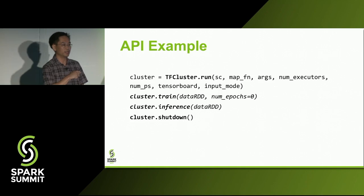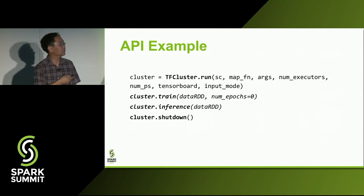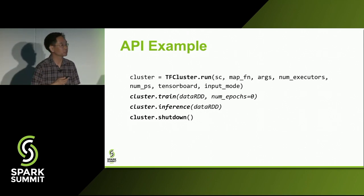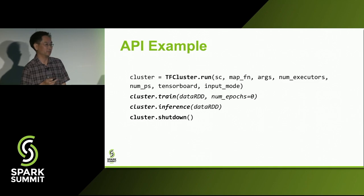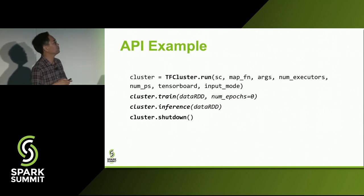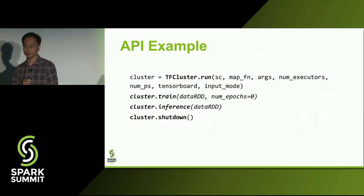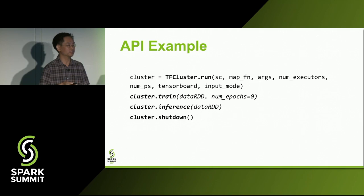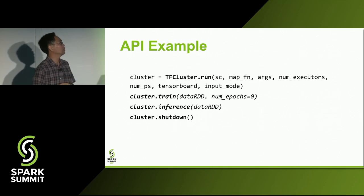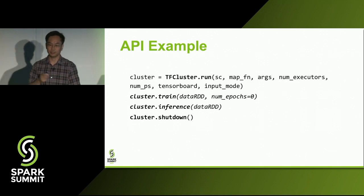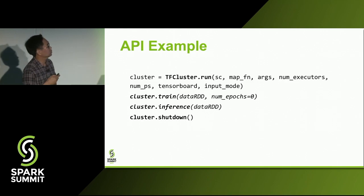For the TensorFlow run API, the parameters are your Spark context, your TensorFlow main function, the arguments you'd normally pass to it, the number of executors you want running TensorFlow nodes, the number of those running parameter servers, whether to launch a TensorBoard server, and whether to use the Spark RDD input mode or the TensorFlow QueueRunner.